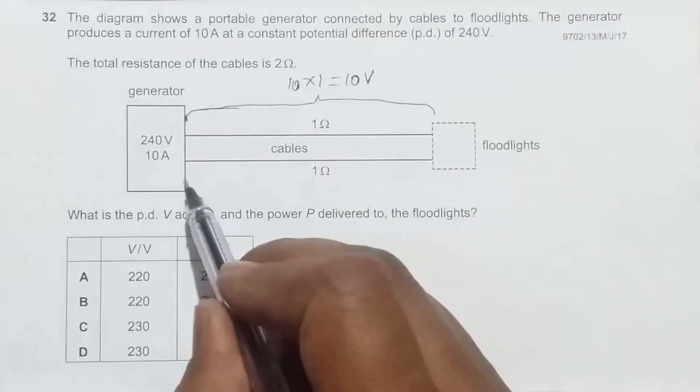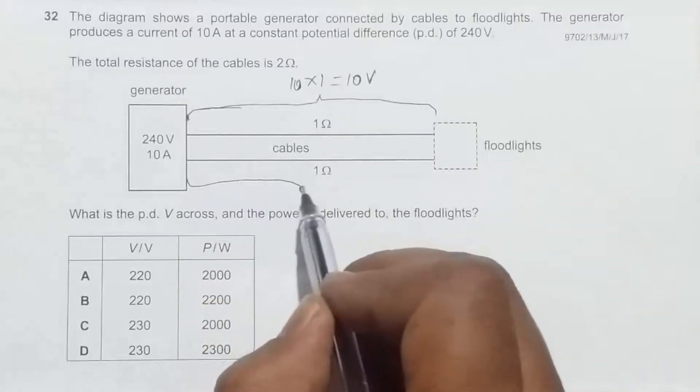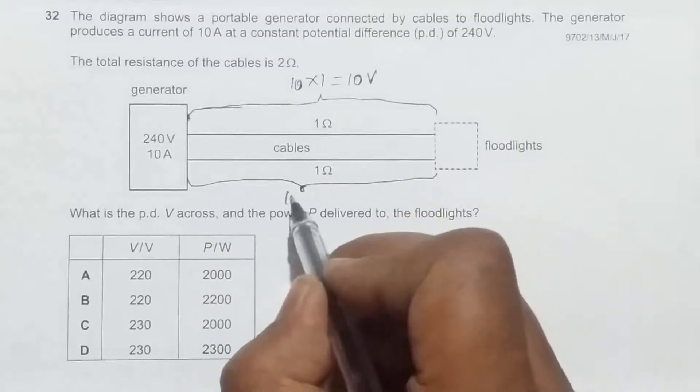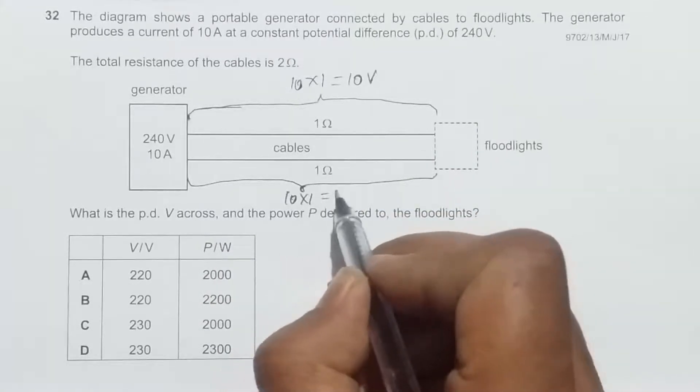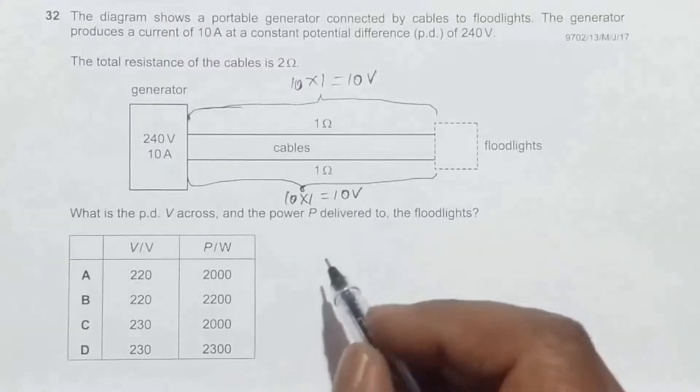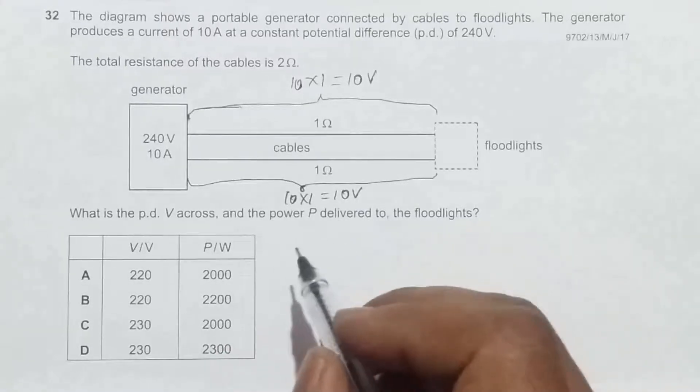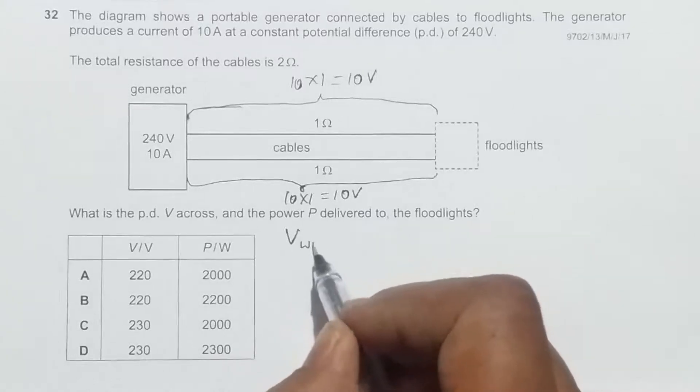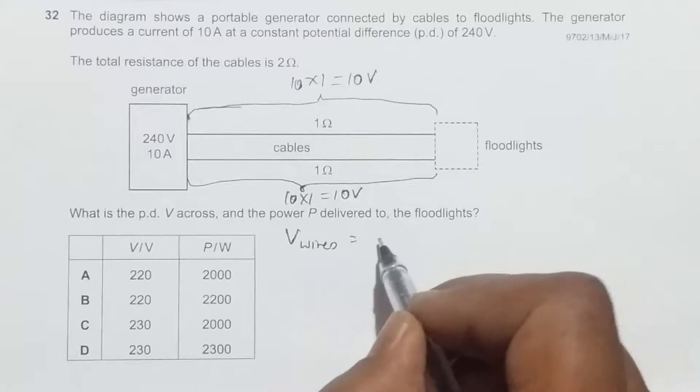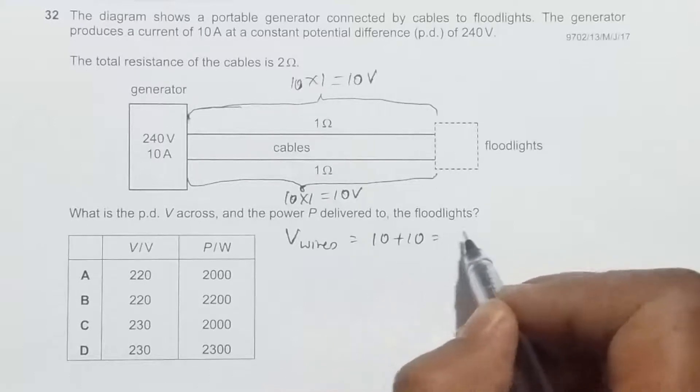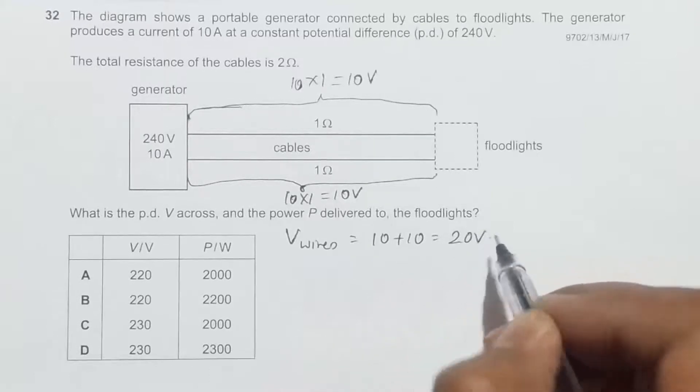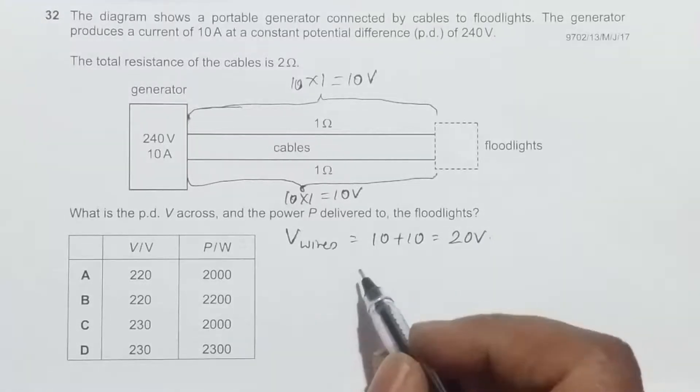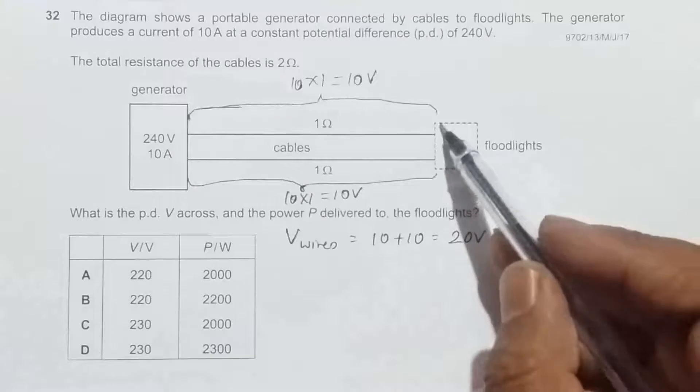In the same way, the same case here as well. So here it is again 10 into 1 equals 10 volts. That means the total potential drop across the wires, V across the wires, equals 10 plus 10 equals 20 volts.